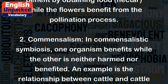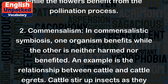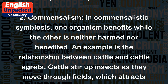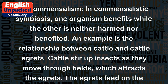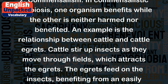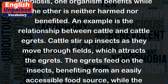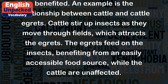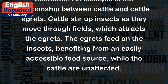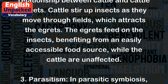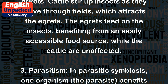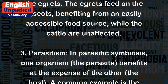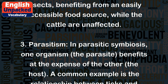2. Commensalism. In commensalistic symbiosis, one organism benefits while the other is neither harmed nor benefited. An example is the relationship between cattle and cattle egrets. Cattle stir up insects as they move through fields, which attracts the egrets. The egrets feed on the insects, benefiting from an easily accessible food source, while the cattle are unaffected.